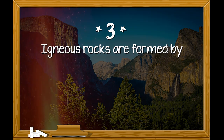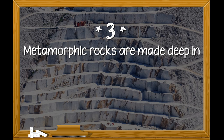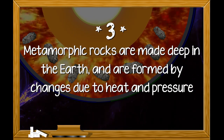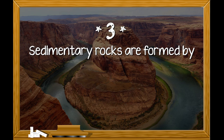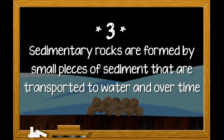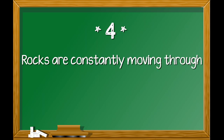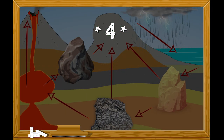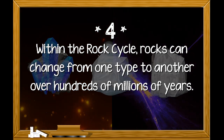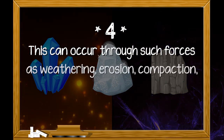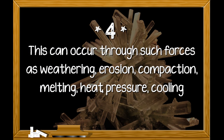Igneous rocks are formed by extreme heat when magma cools above or below the Earth's crust. Metamorphic rocks are made deep in the Earth and are formed by changes due to heat and pressure over a long period of time. Sedimentary rocks are formed by small pieces of sediment transported to water and cemented into rock by pressure. Fourth, rocks are constantly moving through the rock cycle and can change from one type to another over hundreds of millions of years through weathering, erosion, compaction, melting, heat, pressure, cooling, and crystallization.